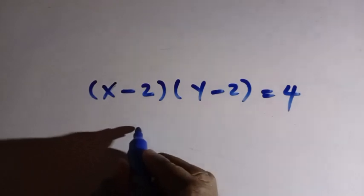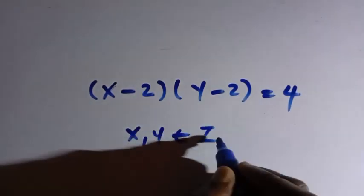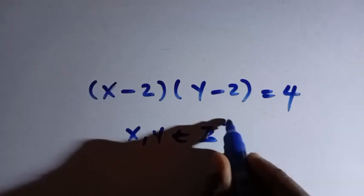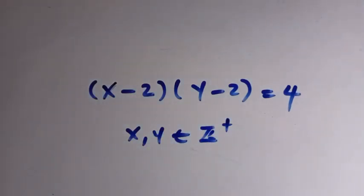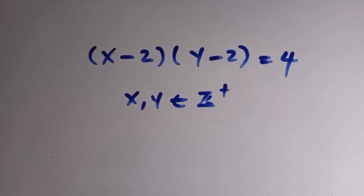So here we have, suppose our x and y are members of a positive integer. Then we look for the factors of 4 from here, and look for the factors of 4.